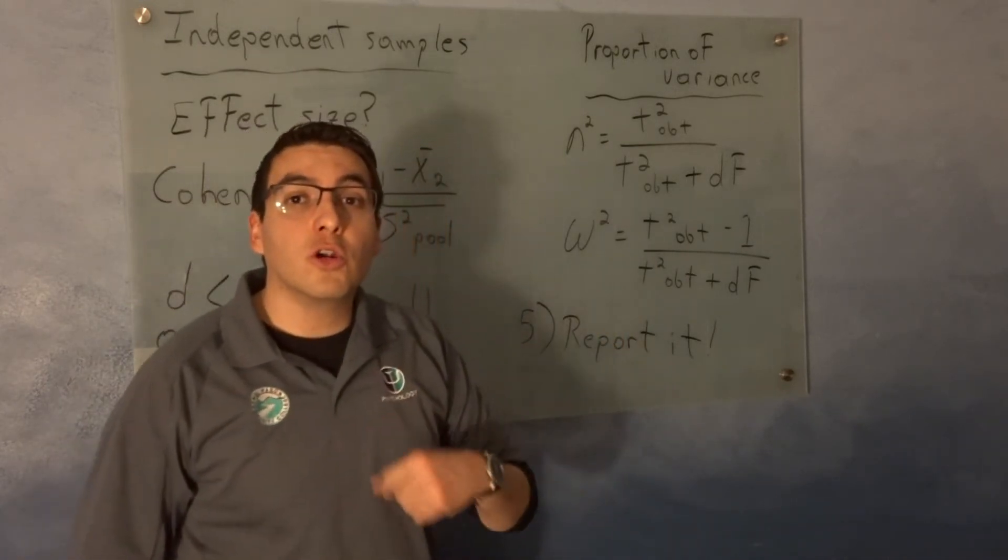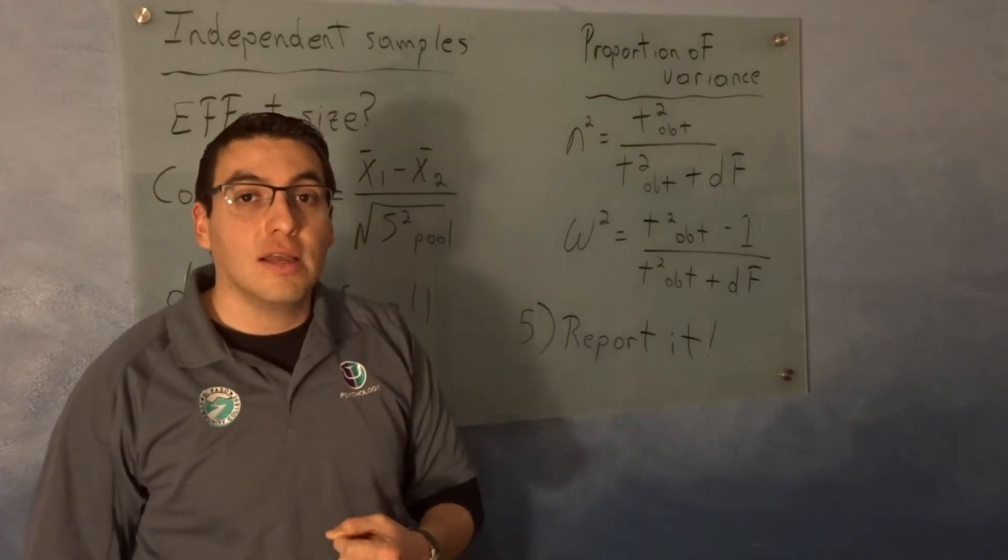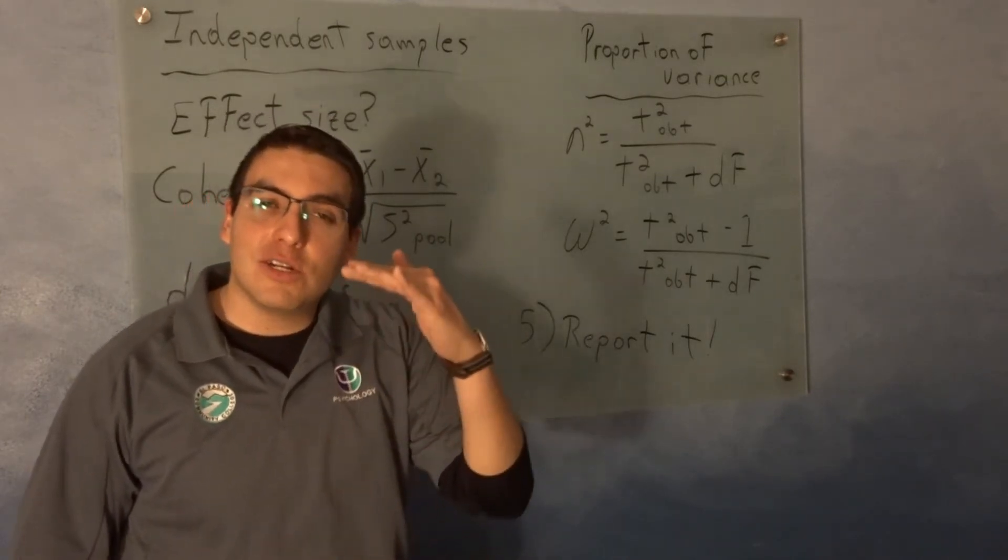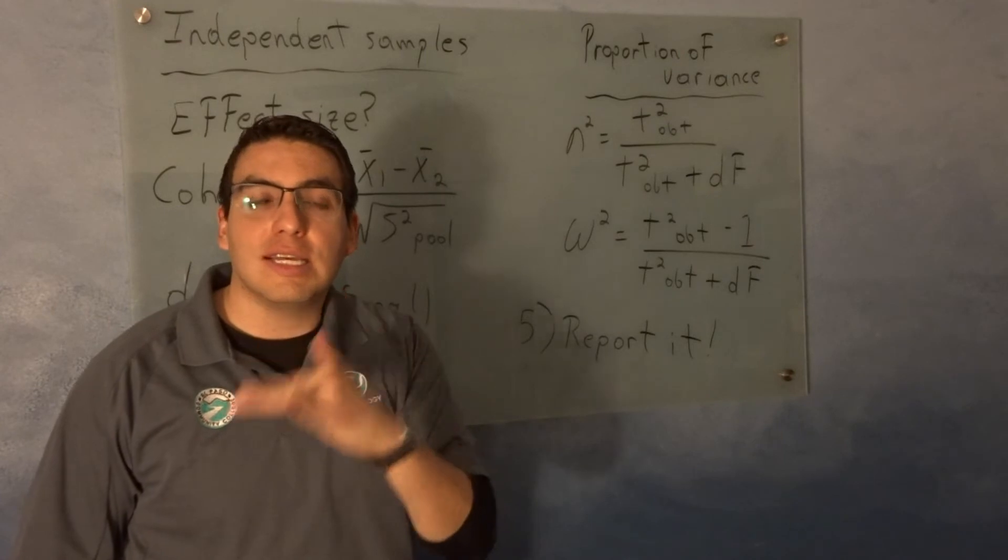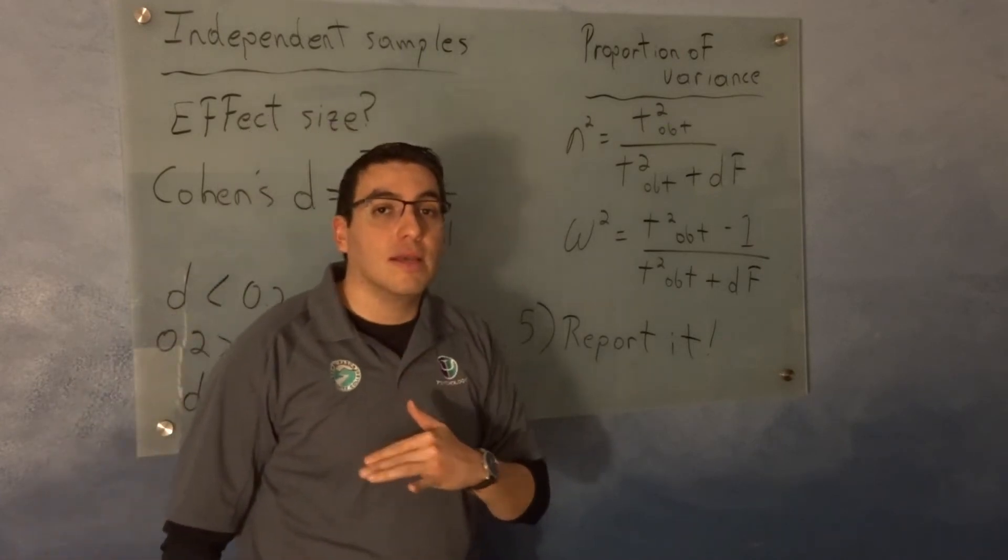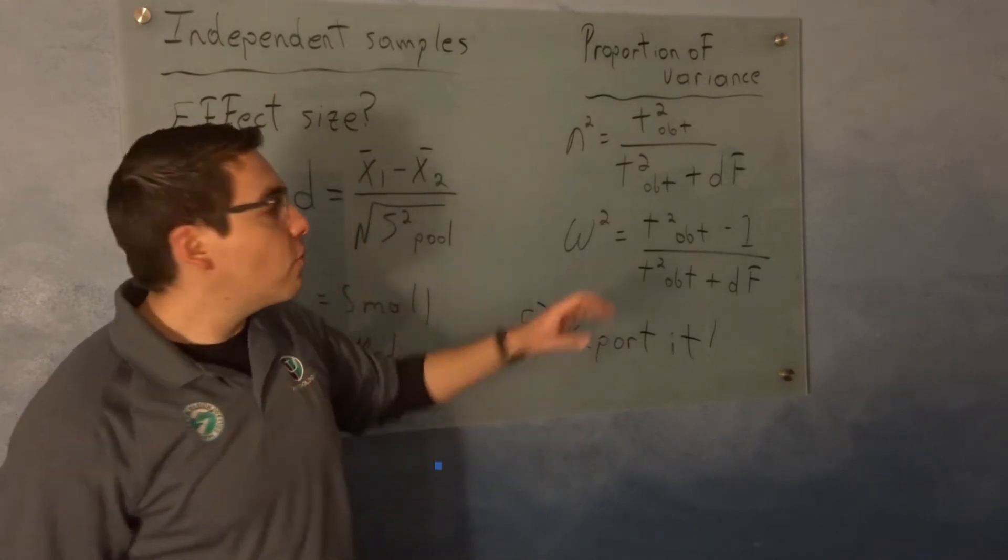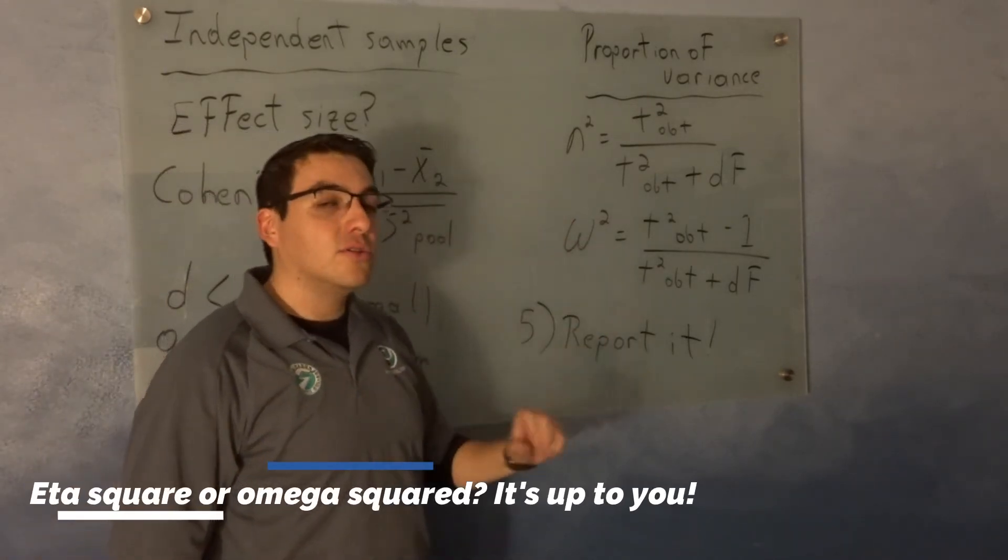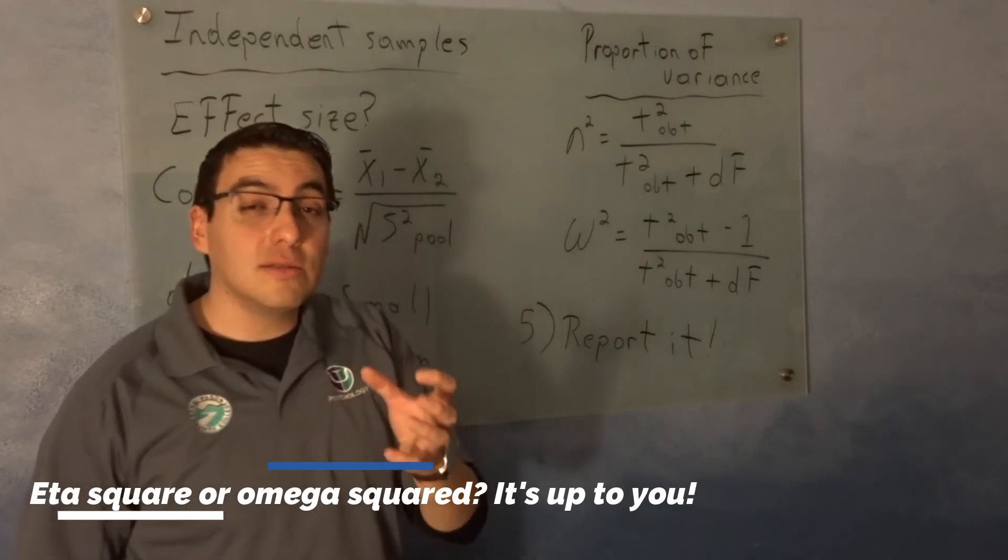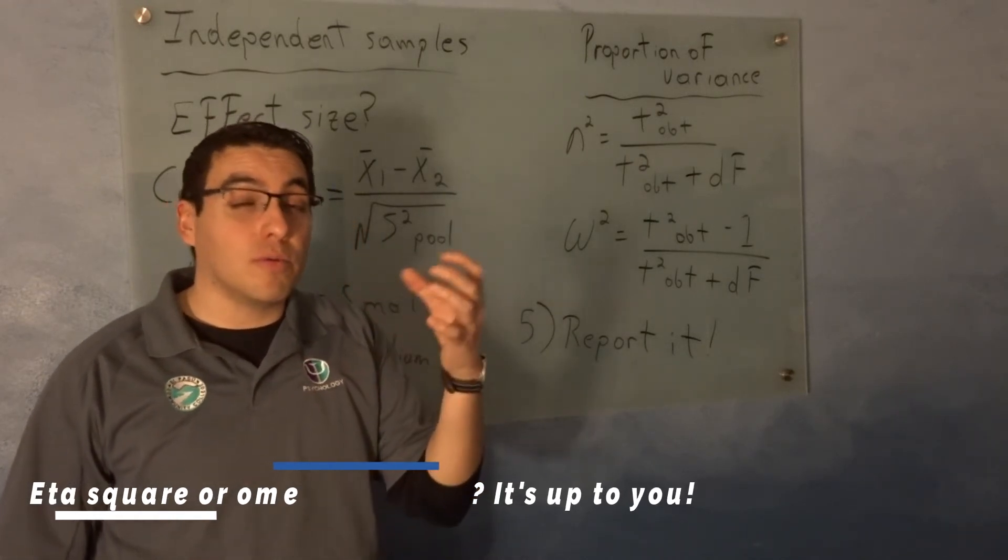Omega-squared is considered more conservative. Conservative meaning like it tries to reduce the possibility of mistakes, the possibility of error. Thus, some journals prefer omega-squared. Some journals are fine with eta-squared. Some journals prefer omega-squared. It really depends on where you're trying to publish whether you want to report one or the other one.